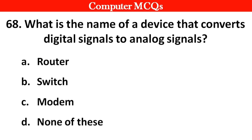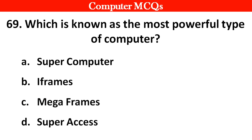Next question: What is the name of a device that converts digital signals into analog signals? Options A. Rotors, B. Switch, C. Modem, D. None of these. Right answer is option C: Modem.